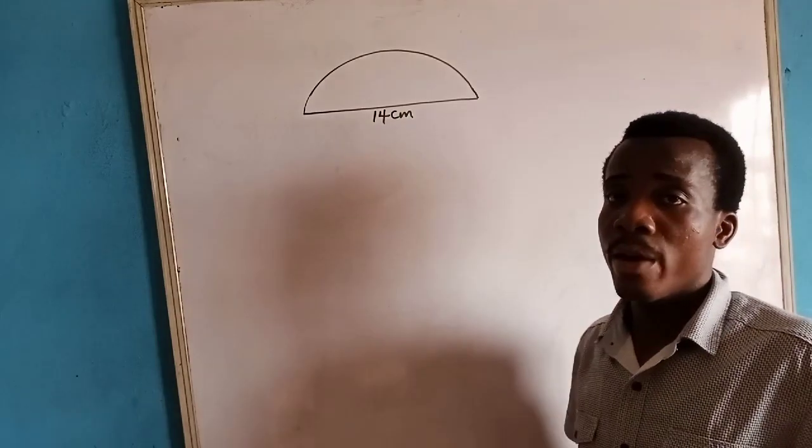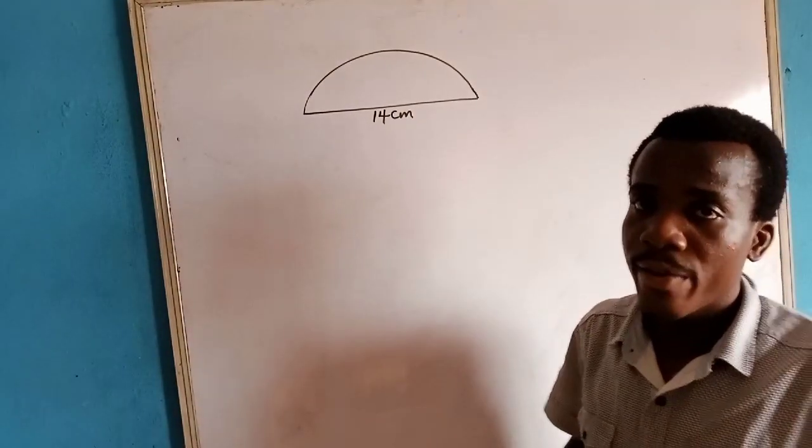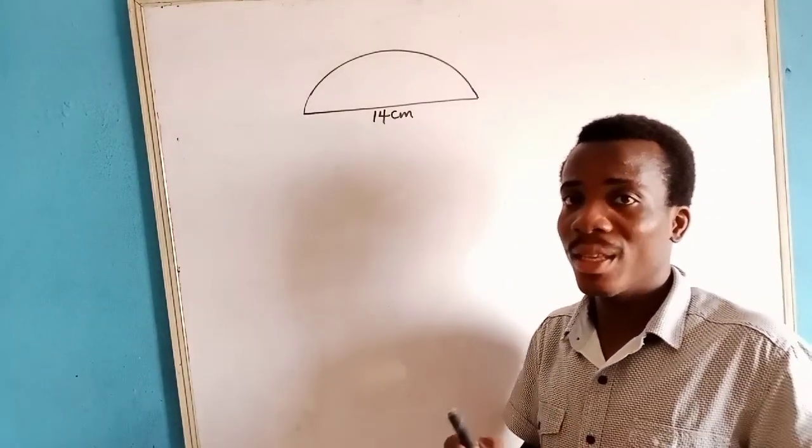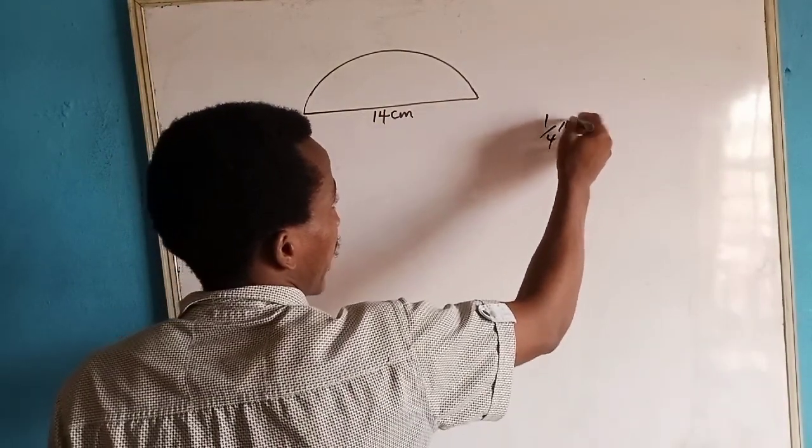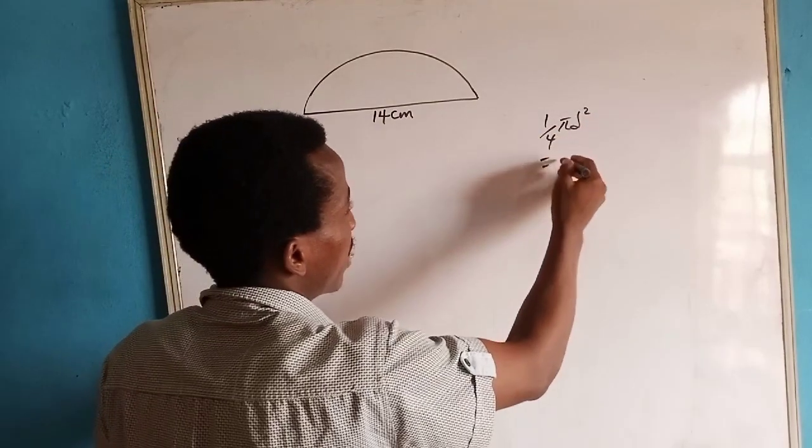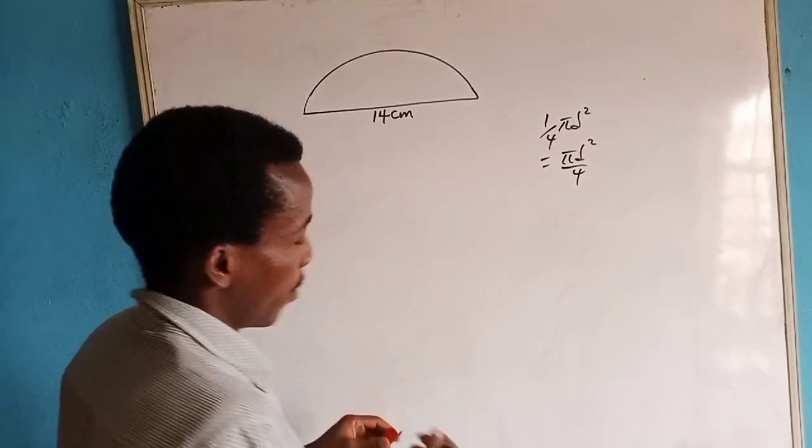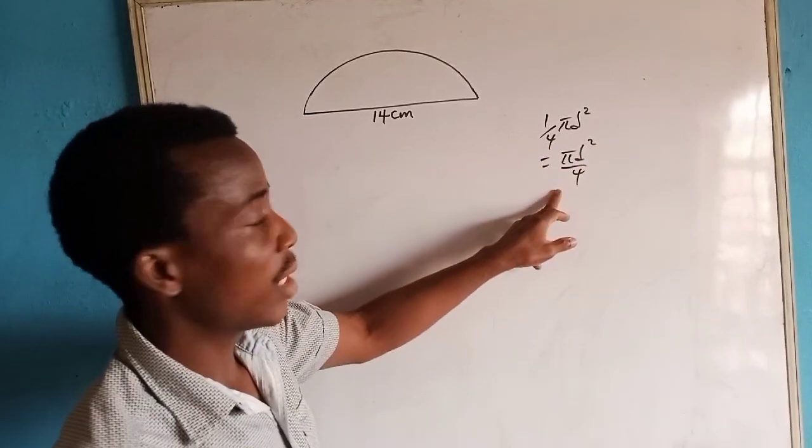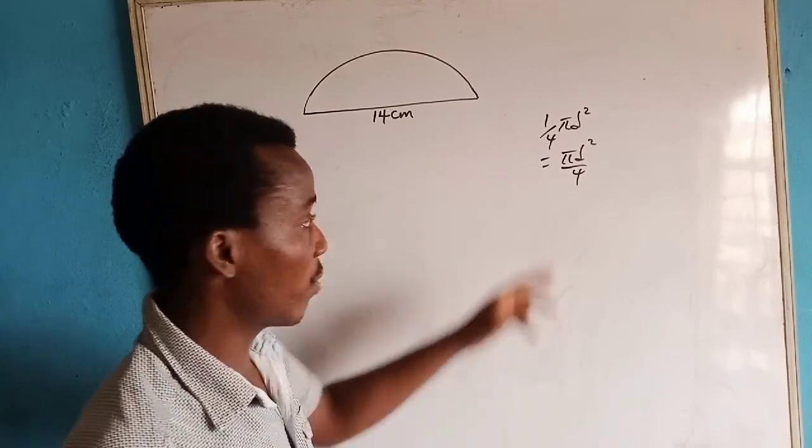How do we calculate the area of this semi-circle? Remember, the formula for finding the area of a full circle when diameter is given is π times d squared over 4. This is the formula for finding the area of a circle when diameter is given.